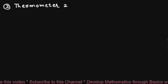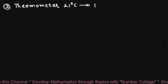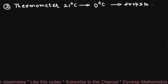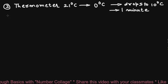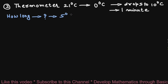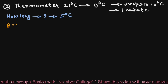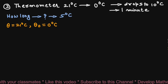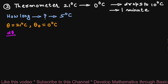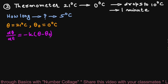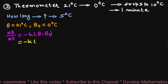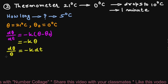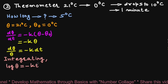In the second problem, a thermometer from a room at 20°C is brought to surroundings where the temperature is 0°C. The reading of the thermometer drops to 10°C in one minute. We have to find how long it will take to drop the temperature further to 5°C. The initial temperature θ is 21°C and the surroundings temperature θ₀ is 0°C. By Newton's Law of Cooling, dθ/dt = −k(θ − 0) = −kθ. Separating variables: dθ/θ = −k dt. Integrating, we get log θ = −kt + c.